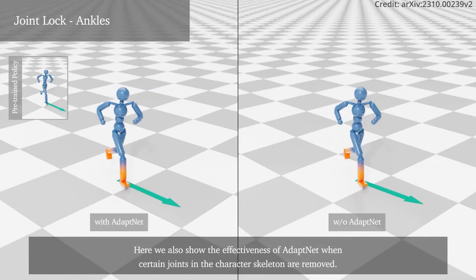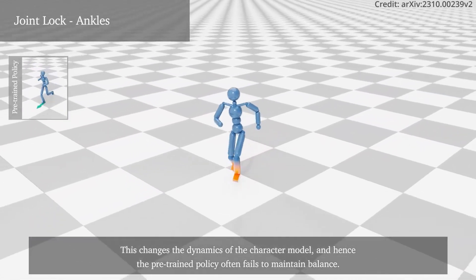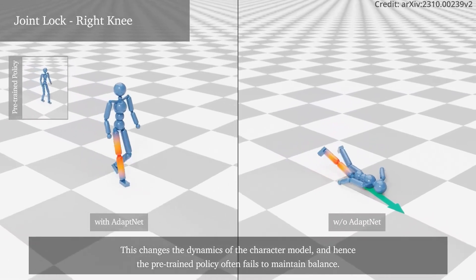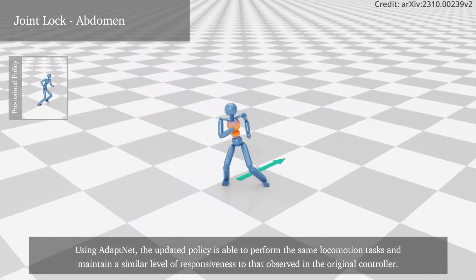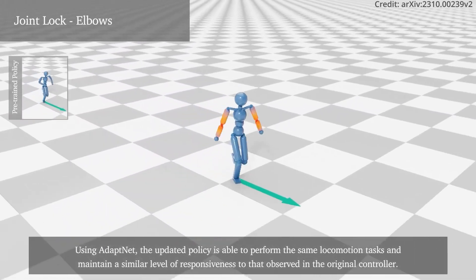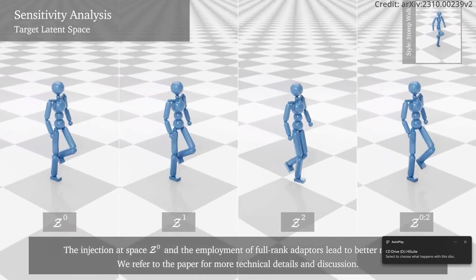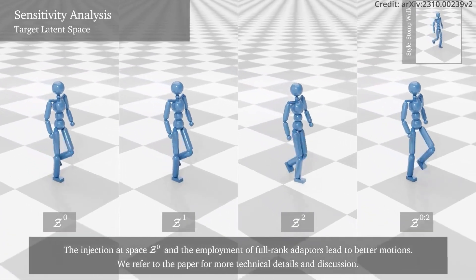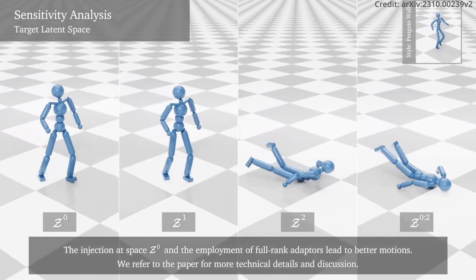Striking a balance between avoiding overfitting and ensuring the learning of stylized motions, AdaptNet demonstrates performance variations when different regularization is applied to the injected latents. This balance ensures that while regularization is not always necessary, its application is crucial in certain tasks to prevent overfitting and ensure the successful learning of stylized motions.